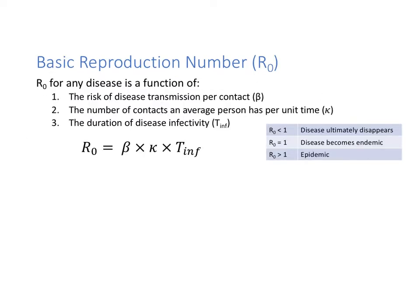We can break down what R-naught is — it's essentially a function of three things: the risk of disease transmission per contact, referred to as beta; the number of contacts an average person has over a period of time, referred to as kappa; and the duration of disease infectivity. All three of those give rise to what we define as R-naught.